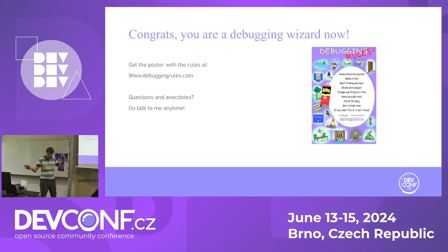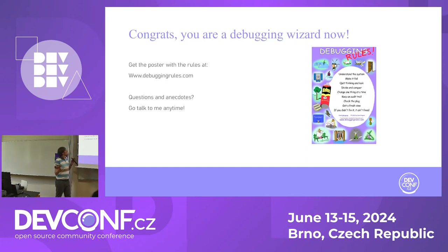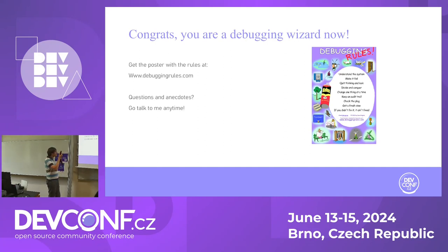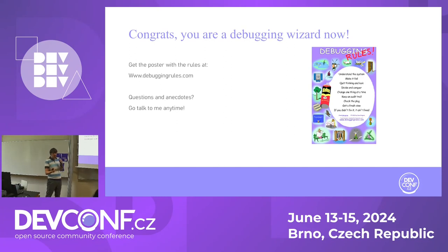Those are the nine rules. Congratulations — if you follow them, you might be a debugging wizard too. On the website debuggingrules.com you can get a poster with a reminder of all the debugging rules. If you have questions and anecdotes, come talk to me anytime. It seems like I have lots of time left, so I can take one or two questions now.